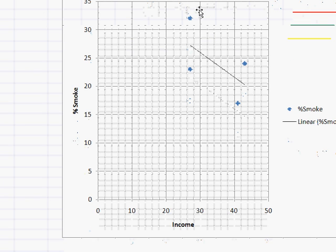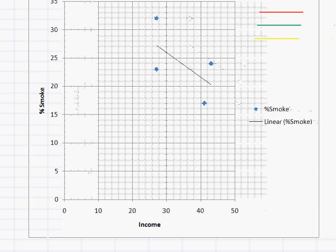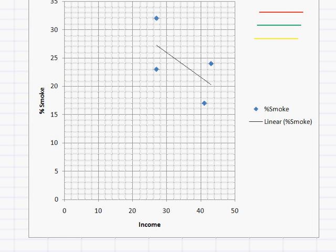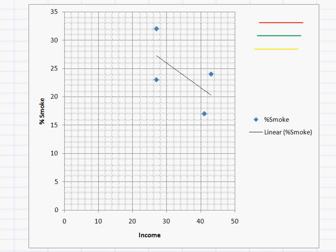And so what we might want to do is see if there's a relationship between these two variables. Is there a relationship between smoking and income? And what we see here is that as the average income goes up, the percent of people in a state who smoke goes down.